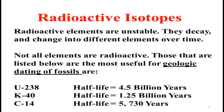Scientists use many methods to predict the age of fossils and rock, such as radioactive isotopes, thermoluminescence, and electron spin resonance.